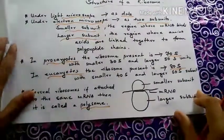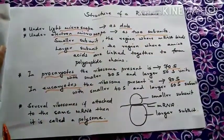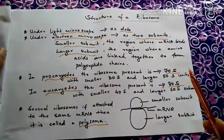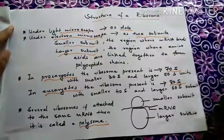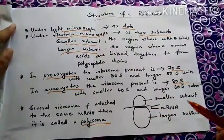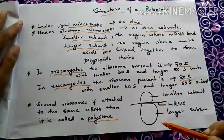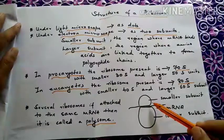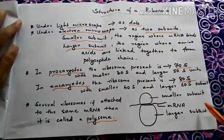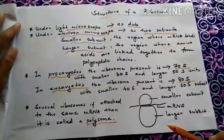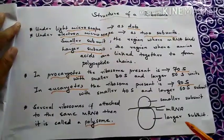Let's learn the structure of a ribosome in detail. Under the light microscope, the ribosomes appear as dots, whereas under the electron microscope they appear to have two subunits: a smaller subunit and a larger subunit. The smaller subunit is a region where the mRNA, also called messenger RNA, binds. The larger subunit is a region where the amino acids are linked to form long polypeptide chains.